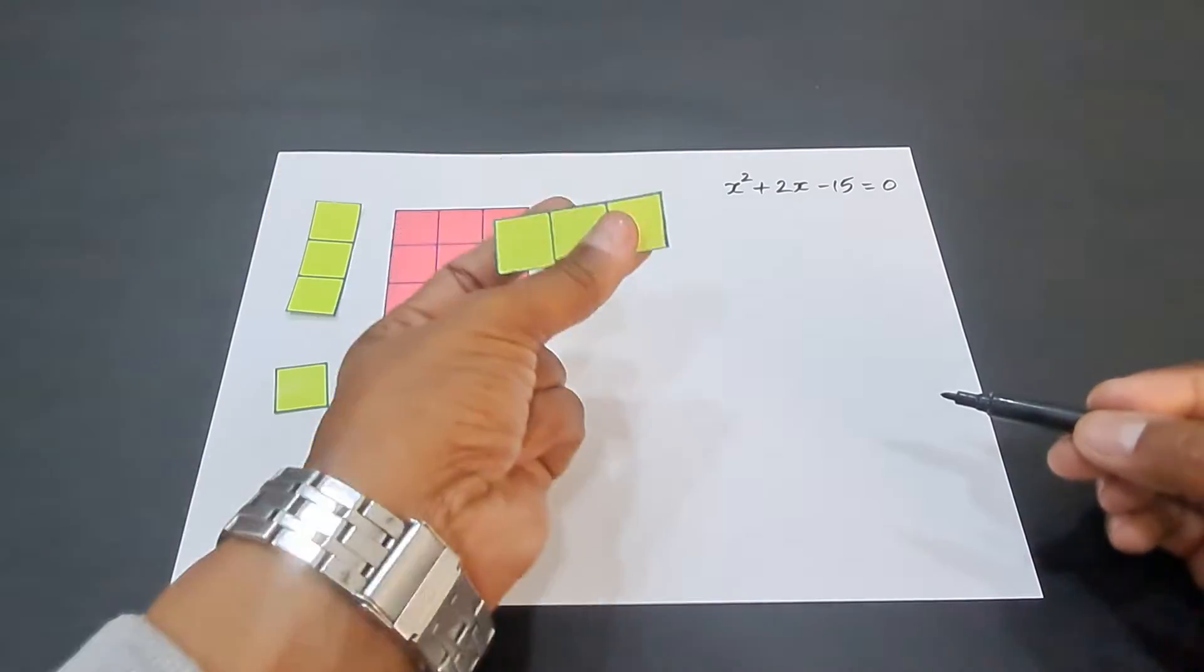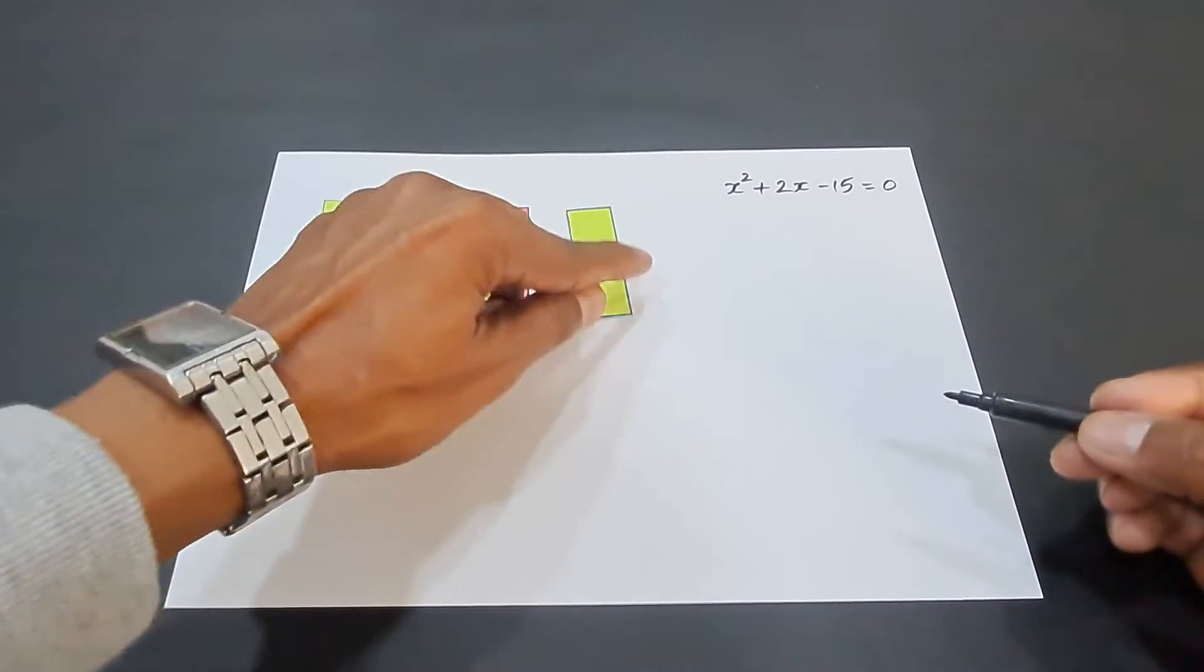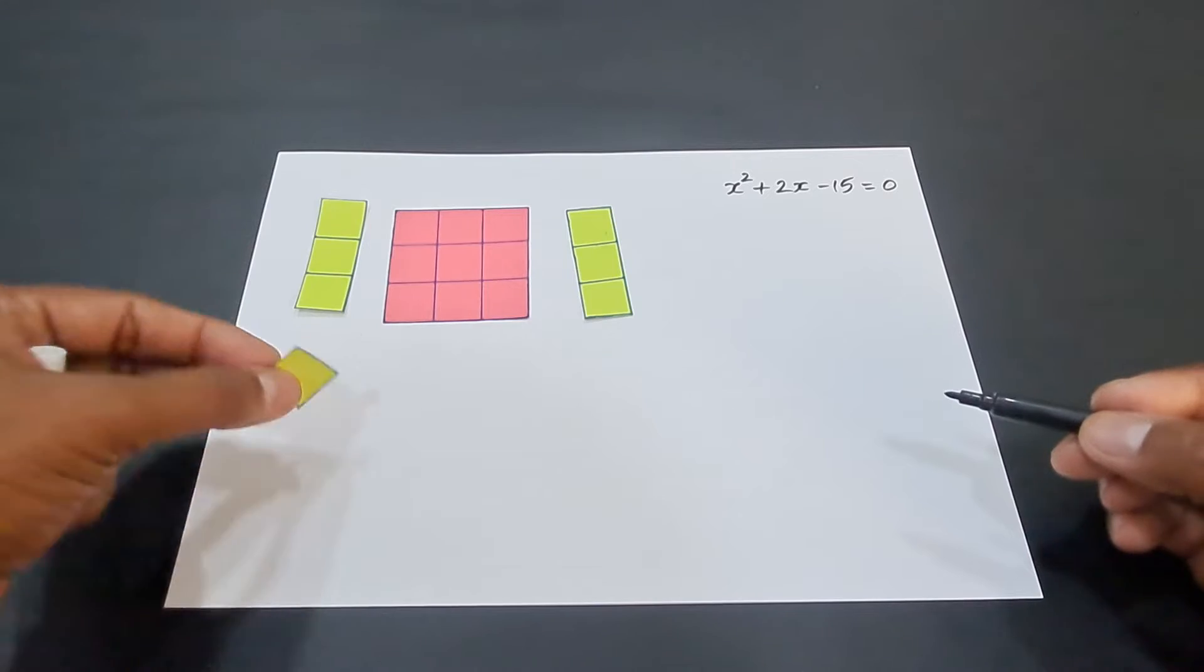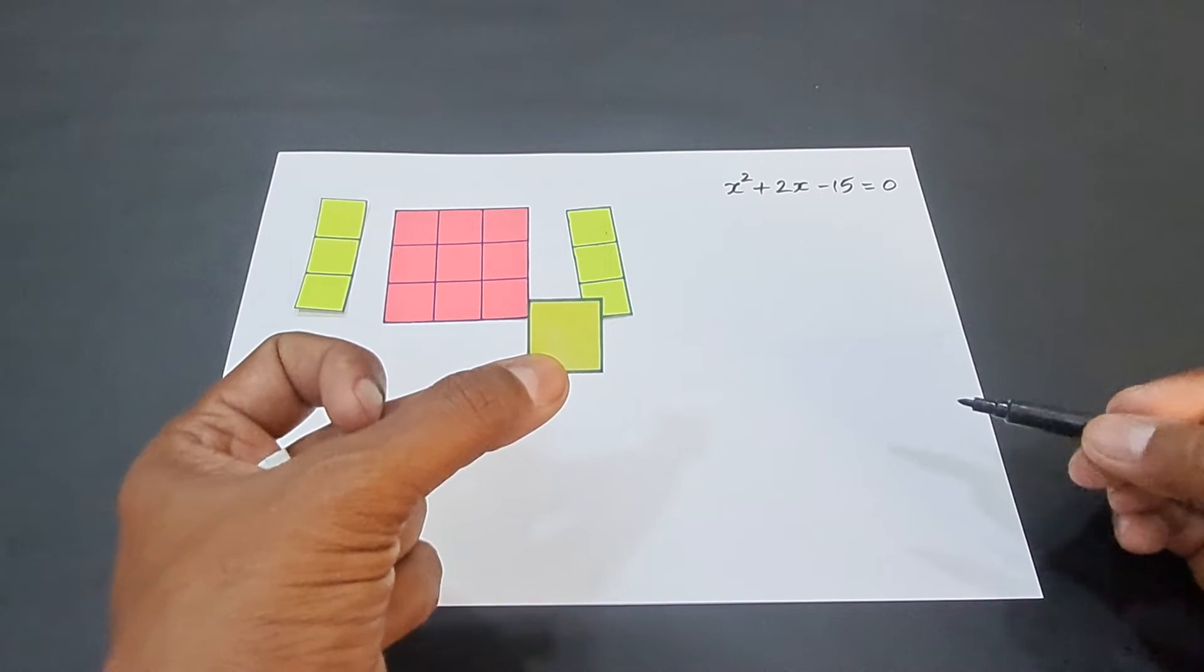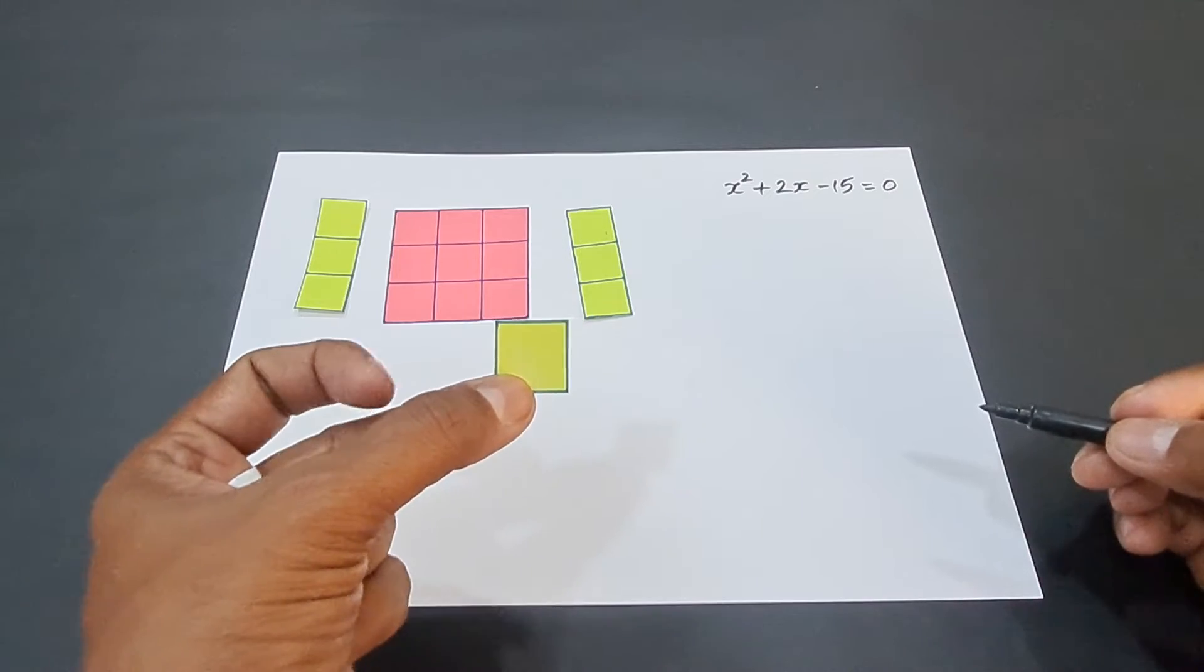We have another congruent figure. So, 2 figures of the same size and there is a 1 by 1 small square which is also required in the activity.